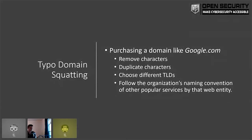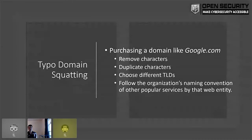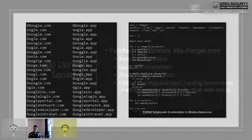Historically, we've had a few go-to methods, and one of those is typo domain squatting. Say we want to buy a domain like google.com — we can remove some letters, maybe take out an O, duplicate letters to get three O's or two L's. We can try google.net or google.org in different top-level domains. Or we can look for services they own, like googleapis.com, and try to name things around their naming convention. A lot of these domains are available — which is the horrifying thing — and you can buy them for $20, maybe $30 in some cases.